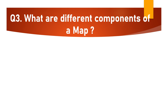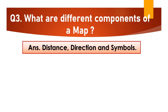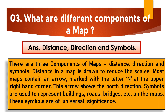Question No. 3: What are the different components of a map? There are three components of maps: Distance, Direction and Symbols. Distance in a map is drawn to reduce the scales. Most maps contain an arrow marked with the letter N at the upper right-hand corner, which shows the north direction. Symbols are used to represent buildings, roads, bridges, etc. on the maps, and these symbols are of universal significance.